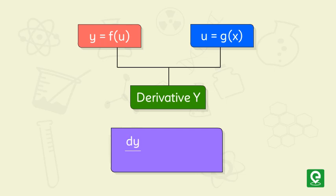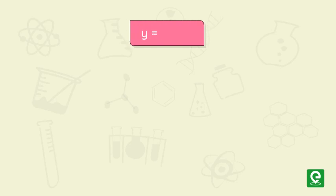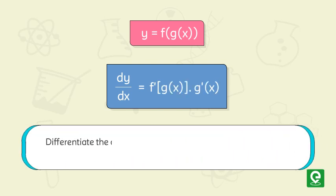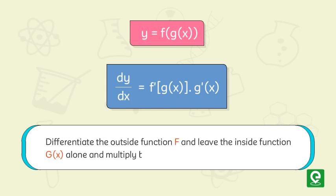dy/dx is equal to dy/du times du/dx. Or if y equals f of g(x), then dy/dx is equal to f'(g(x)) times g'(x). To make this simple: first differentiate the outside function f and leave the inside function g(x) alone, and multiply it by the derivative of the inside function.